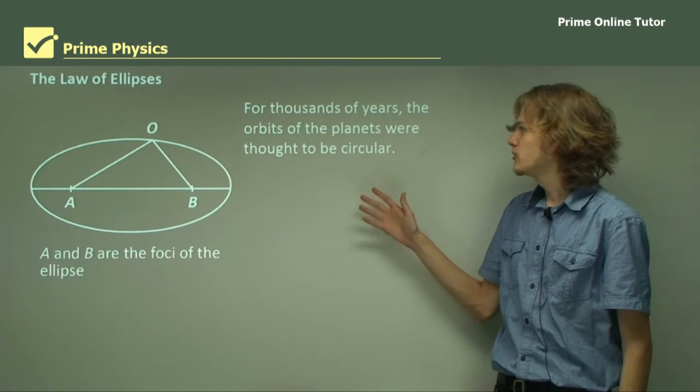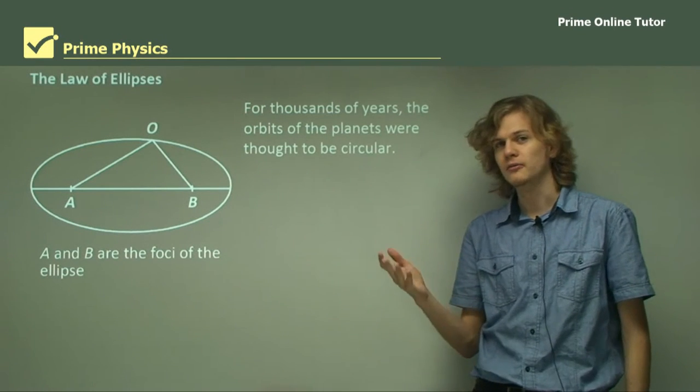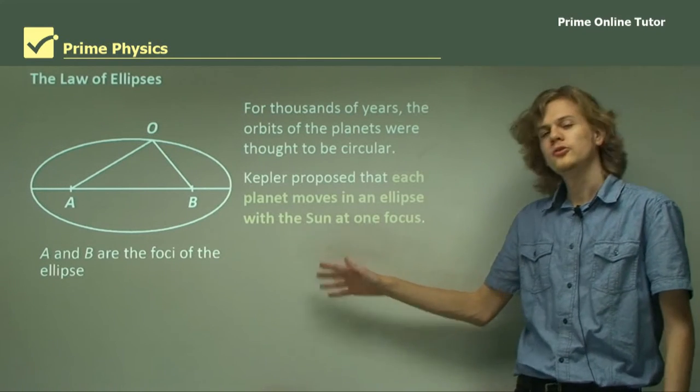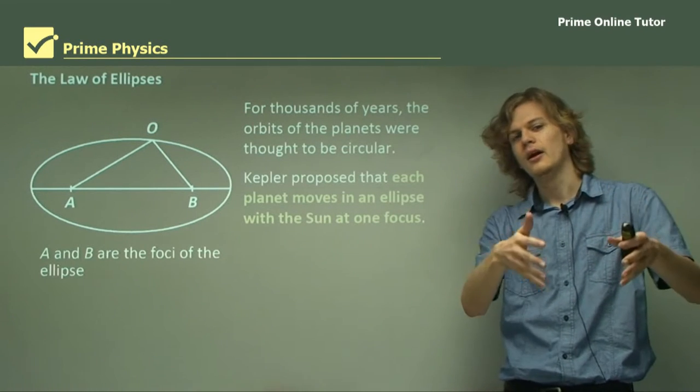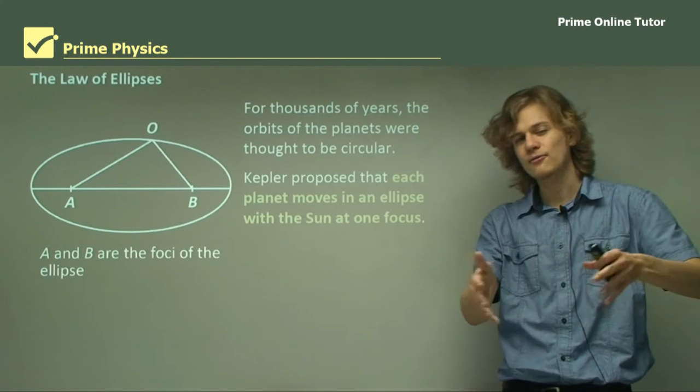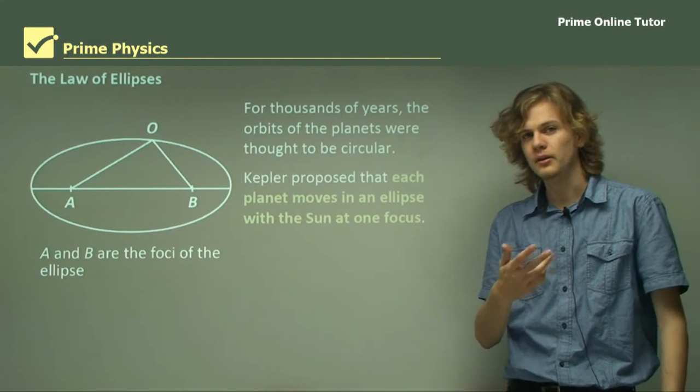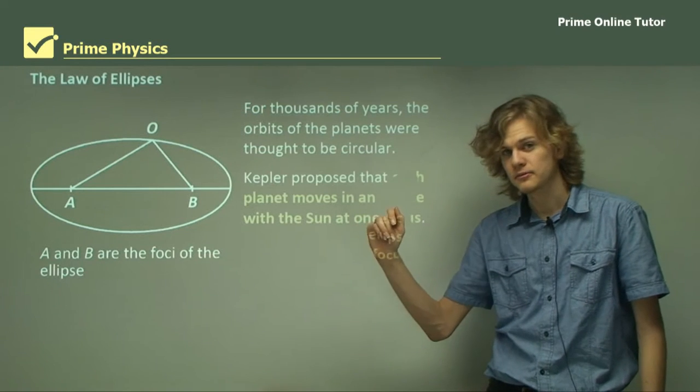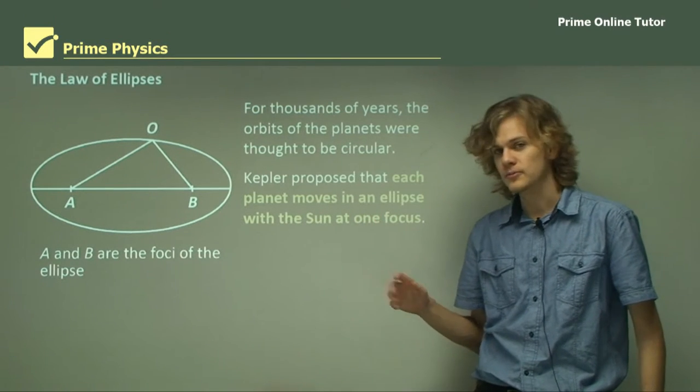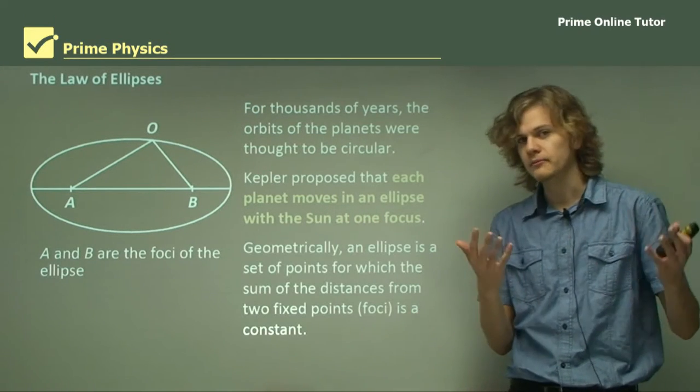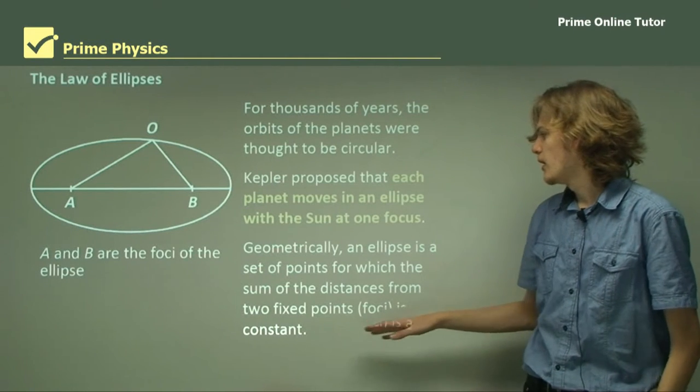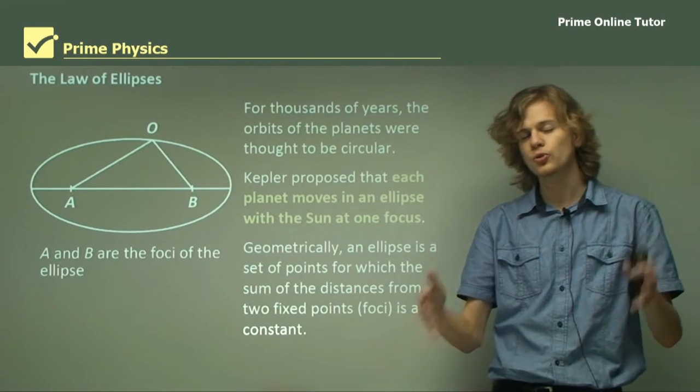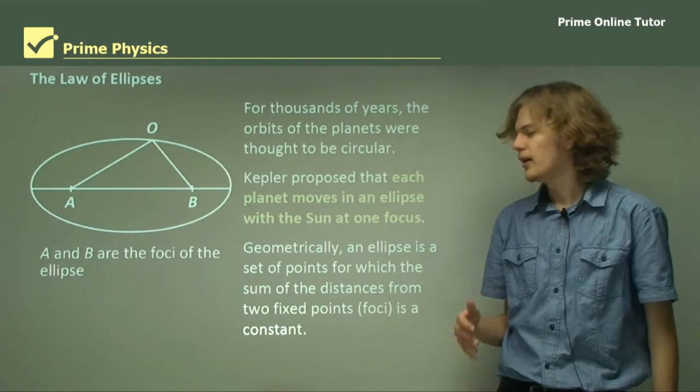For thousands of years, the orbits of the planets were thought to be circular or even spherical. Kepler proposed, due to his studies on all the careful observations made by himself and Brahe, that each planet moves in an ellipse with the sun at one focus. Geometrically, an ellipse is a set of points for which the sum of the distance between two focuses or two foci is a constant.